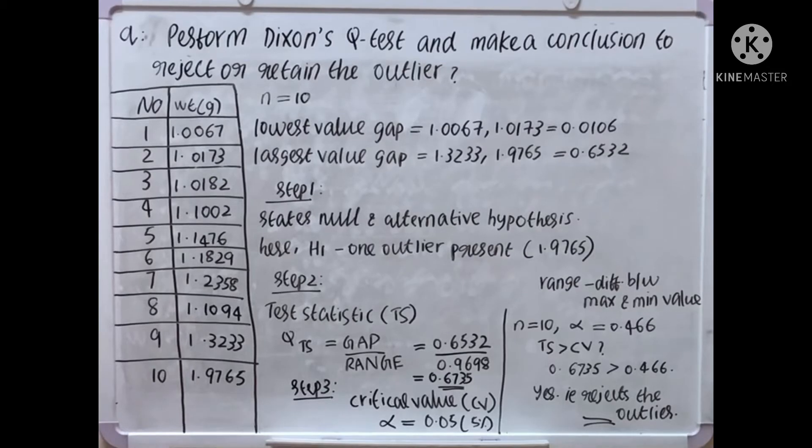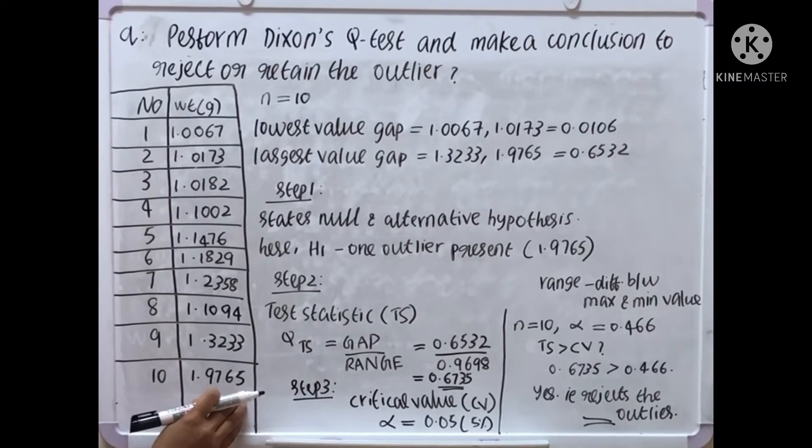But the largest value gap is great, 0.6532. Large value gap is there. So we take that value as outlier. That is, 1.9765 is the outlier in this question. 1.9765 is the outlier. Large value gap is there.